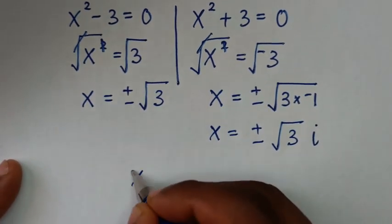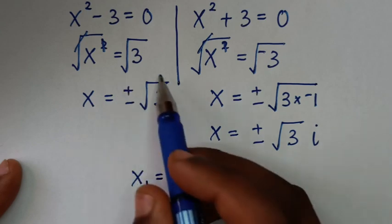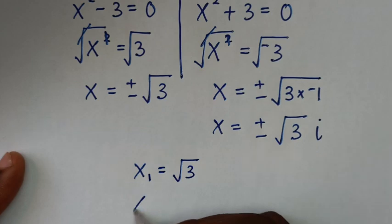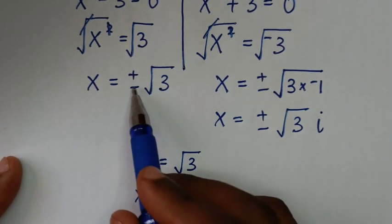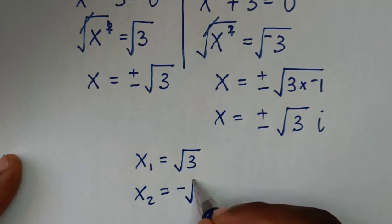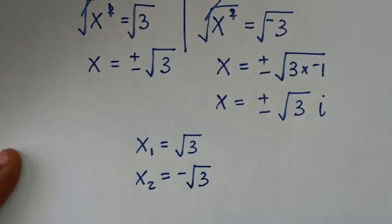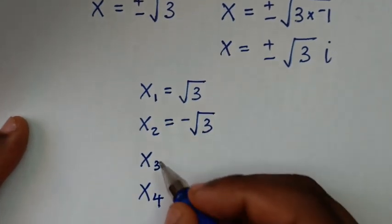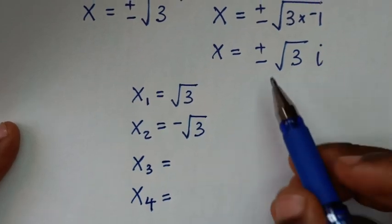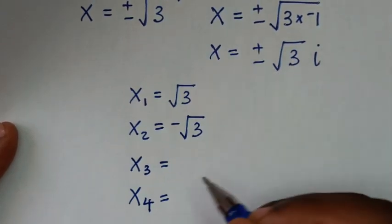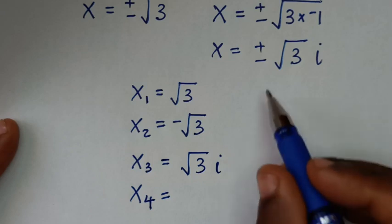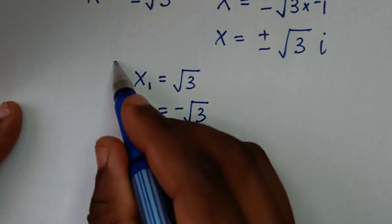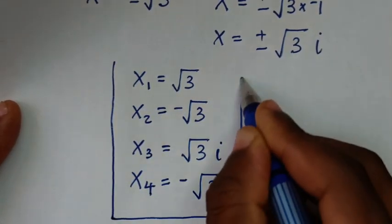Therefore, our conclusion: the first value of x is positive square root of 3, and the second value of x is negative square root of 3 — these are the two real solutions. For the complex solutions, the third value of x is square root of 3 times i, and the fourth value of x is negative square root of 3 times i. So these are all four values of x in this problem.